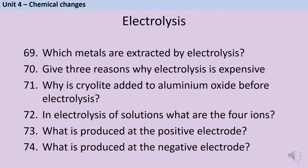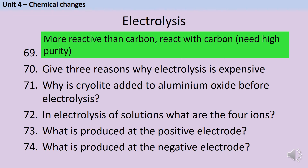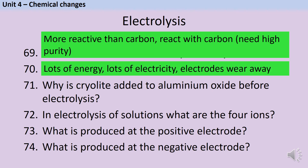Any metal can be extracted by electrolysis, but since it's expensive, we tend to use it in three scenarios. First, where we're extracting a very reactive metal that can't be extracted using reduction with carbon, because if it's more reactive than carbon, the carbon won't displace it from the ore. Second, where the metal reacts with carbon to form compounds, so we can't use carbon reduction. Third, where we want a very pure metal — for instance, copper used in electrical wiring needs to be extremely high purity, because the higher the purity, the higher the electrical conductivity. Electrolysis is expensive because you have to pay for the energy to melt the electrolyte, the electricity to run the process, and replacement electrodes as they wear away. In the extraction of aluminium from aluminium oxide, cryolite is added to disrupt the ionic lattice, allowing it to melt at a lower temperature, saving energy and money.